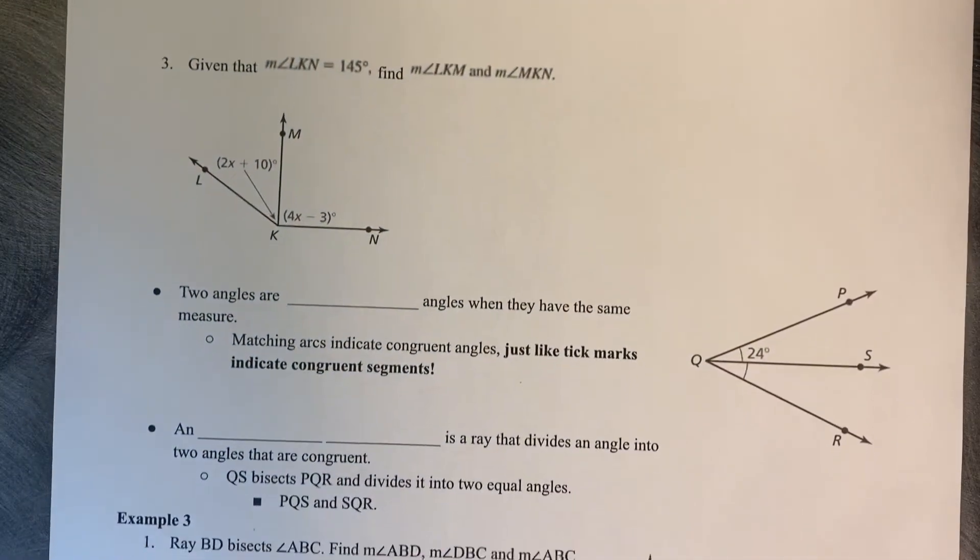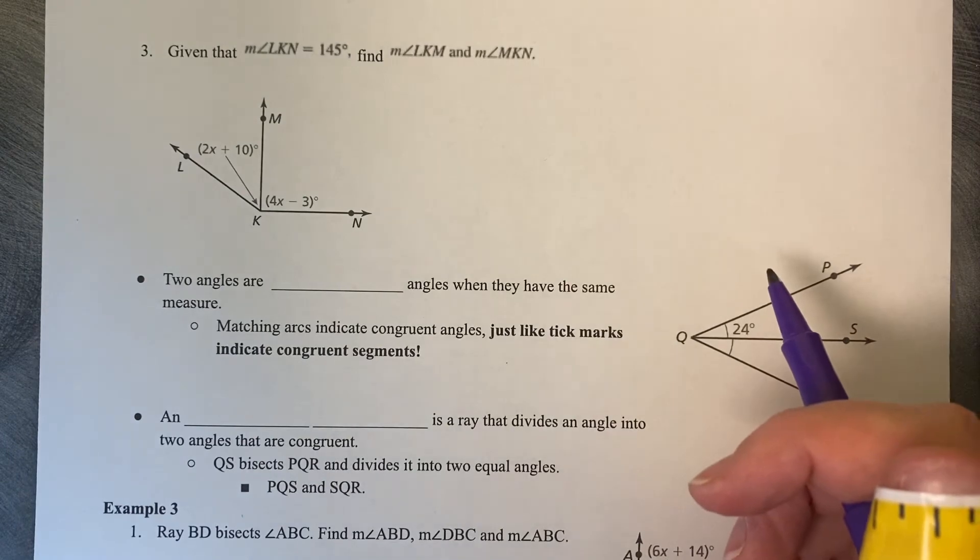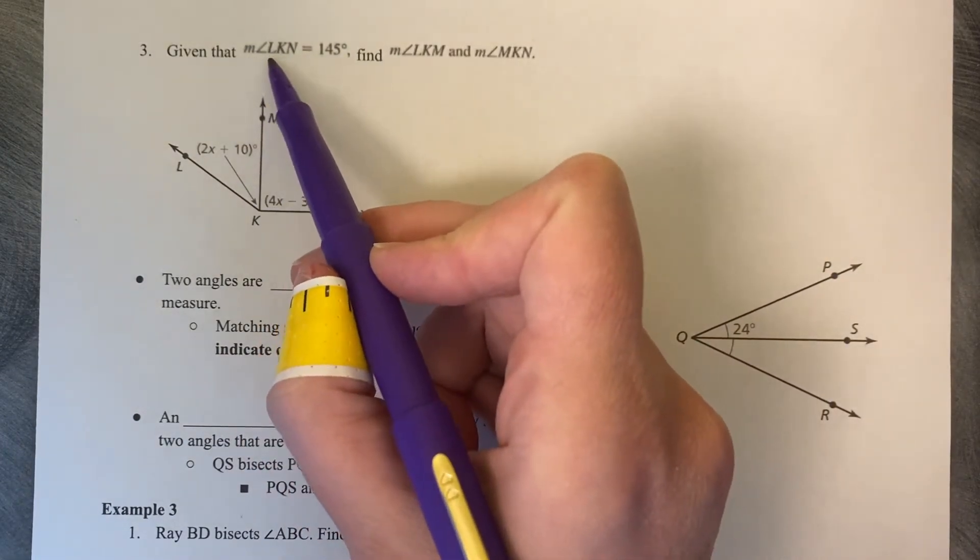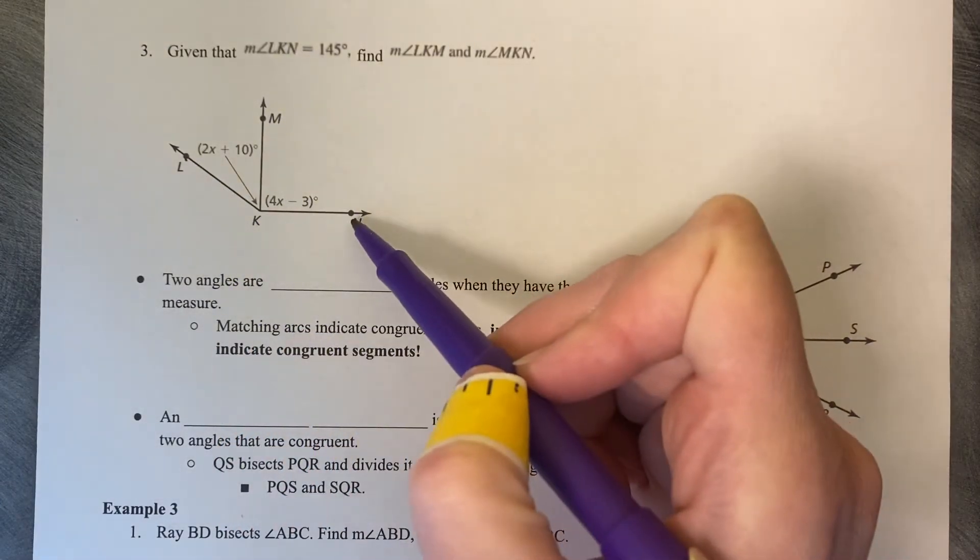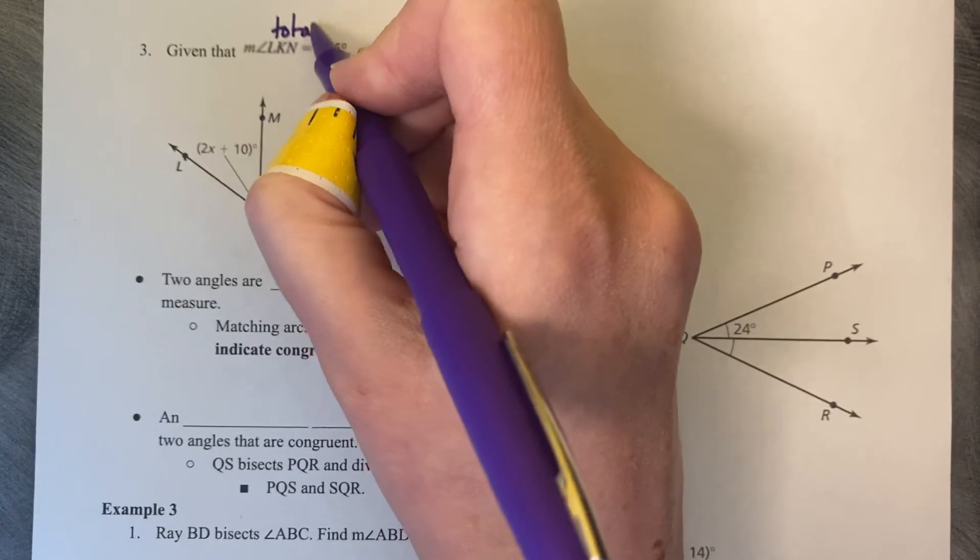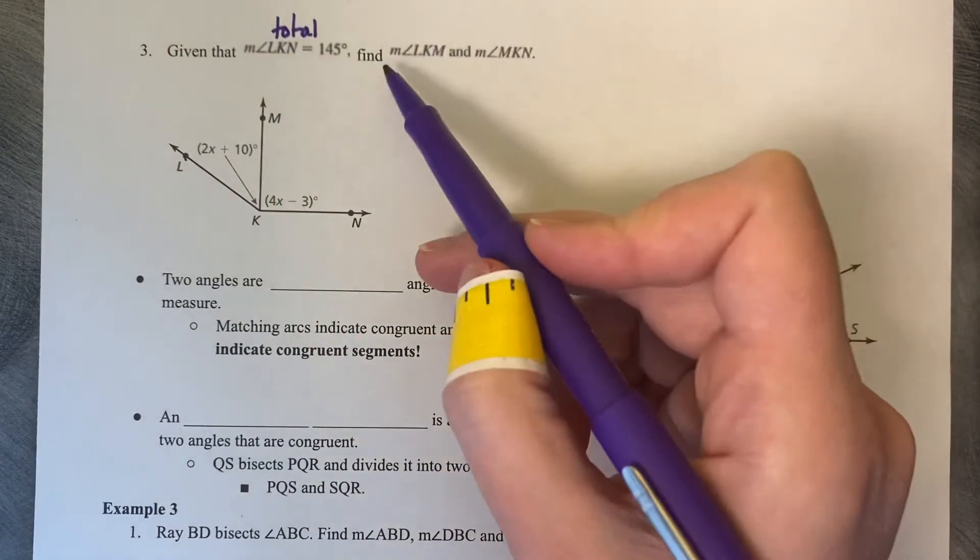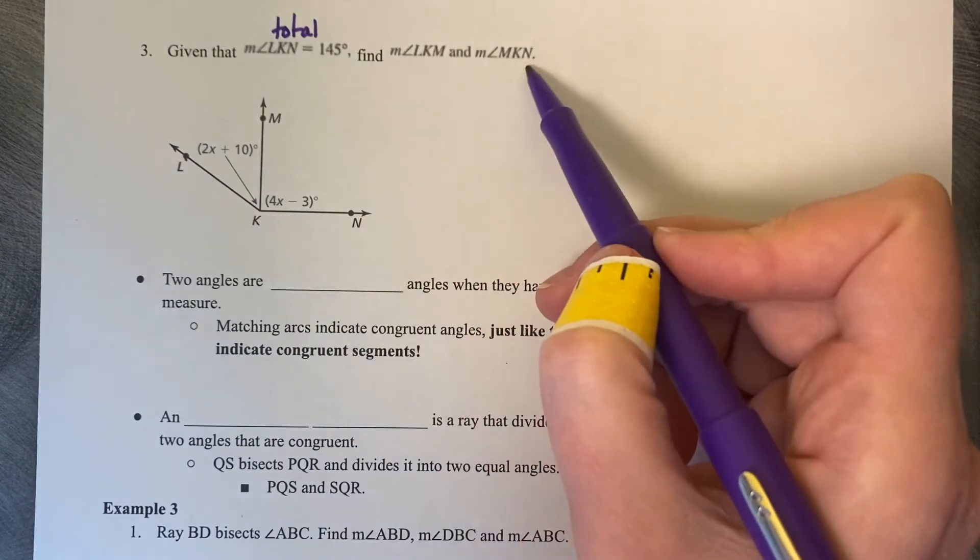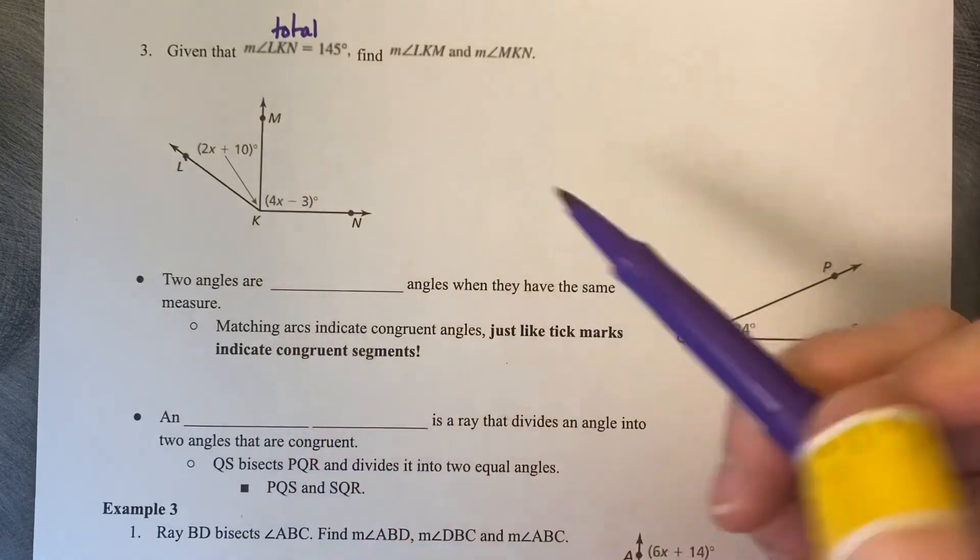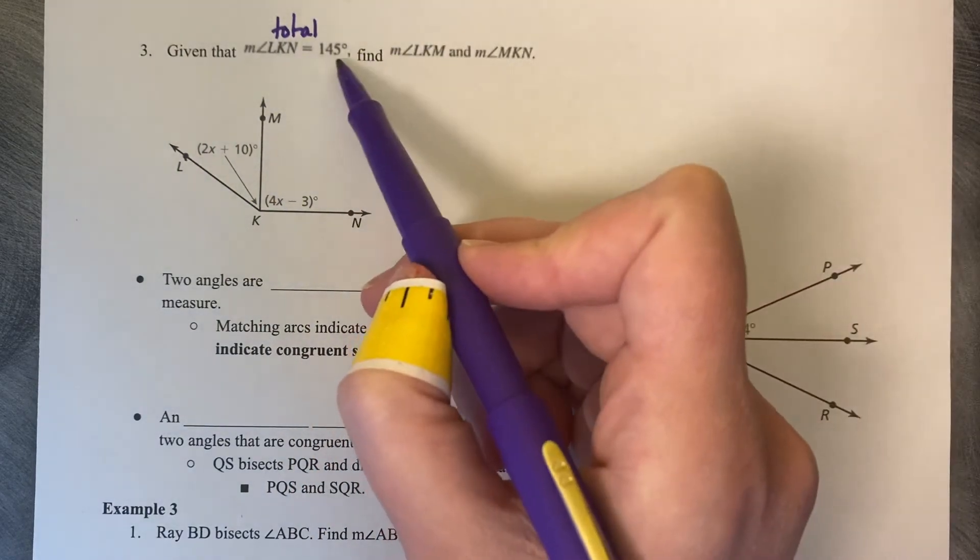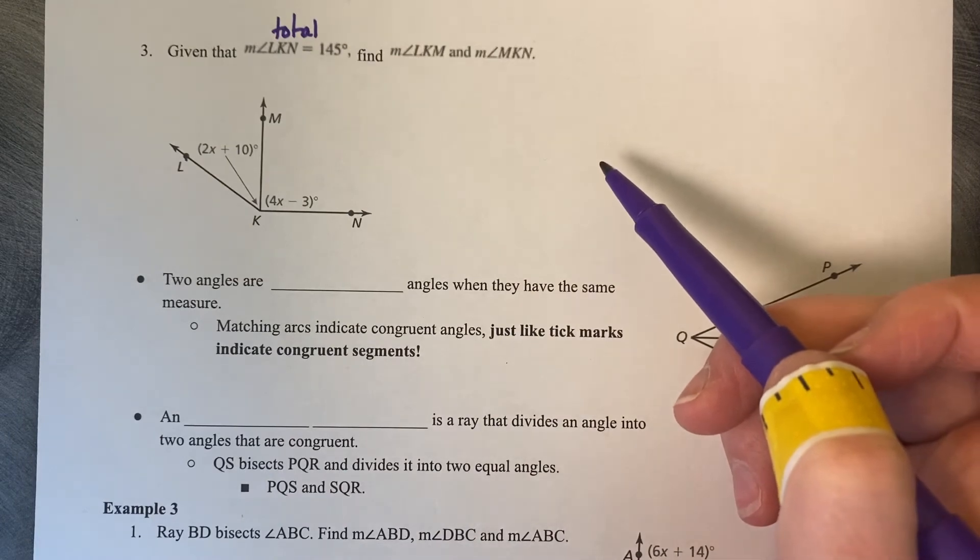Now that we've done some examples using numbers, we're going to try an example that uses expressions. Given that the measure of LKN, L to K to N, so this is the total angle measure, is 145 degrees. Find the measure of LKM and MKN. So that's each of these smaller acute angles. We want to know what their measure size is. So they're going to be some chunk of 145.